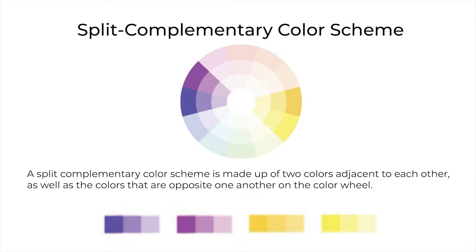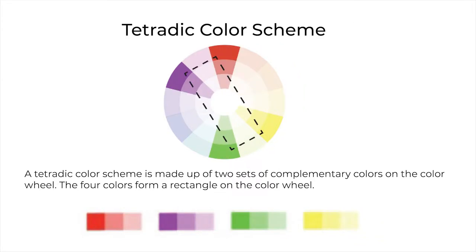The fifth is split complementary: two colors adjacent to each other as well as the colors opposite one another on the color wheel. The sixth is tetradic: two sets of complementary colors on the color wheel, where the four colors form a rectangle on the color wheel.